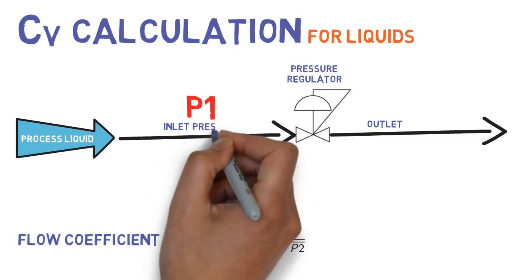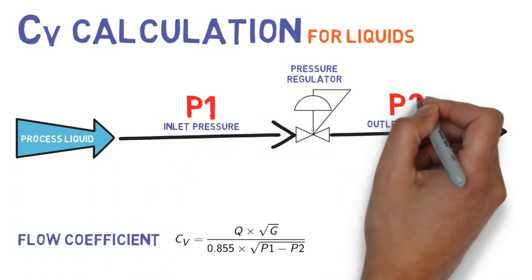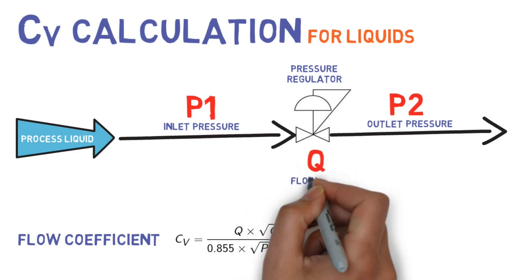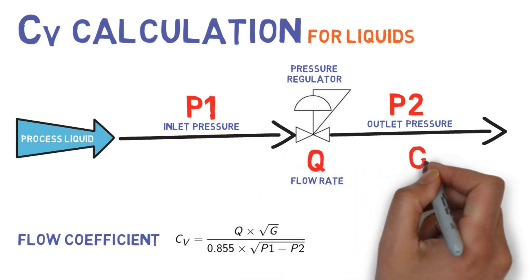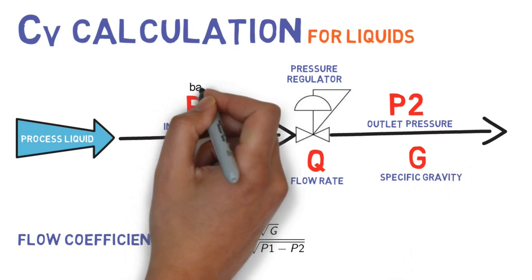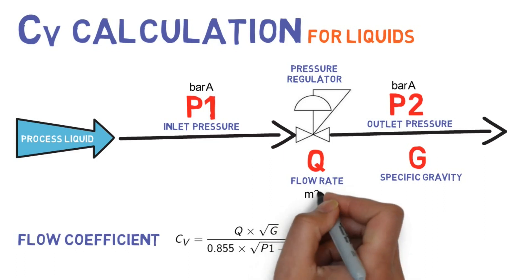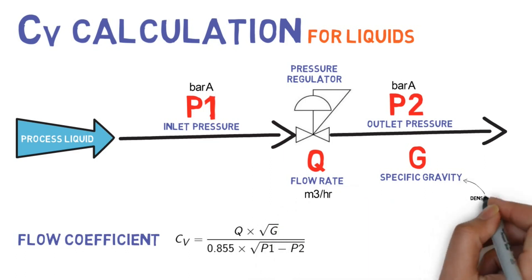P1 is inlet pressure. P2 is outlet pressure. Q is liquid flow rate. G is specific gravity. Unit of pressure will be bar absolute. Unit of flow will be cubic meter per hour.